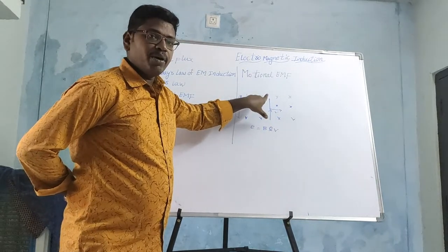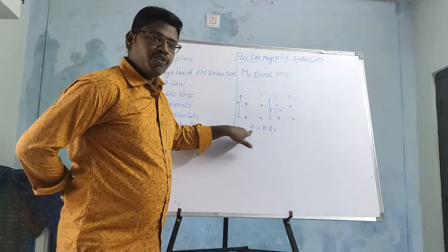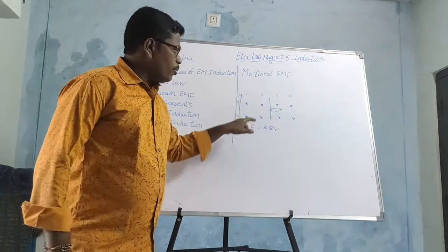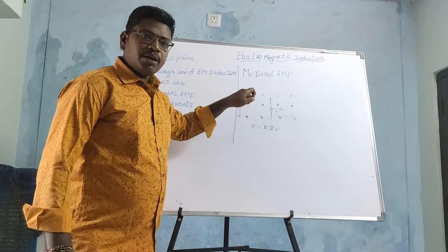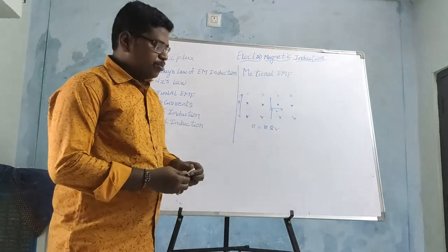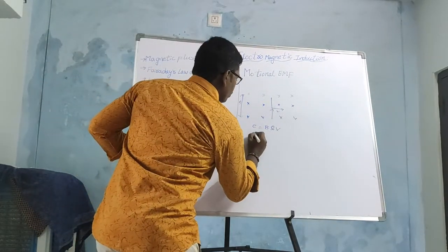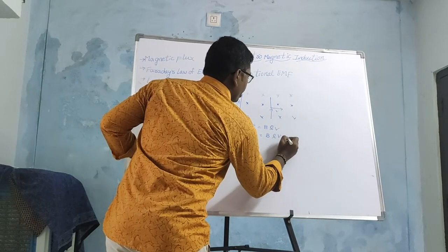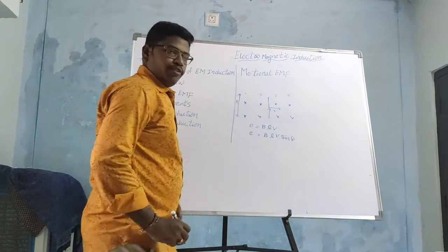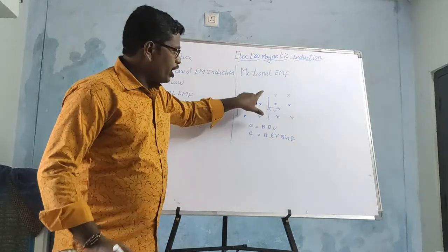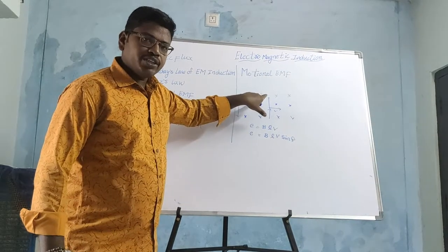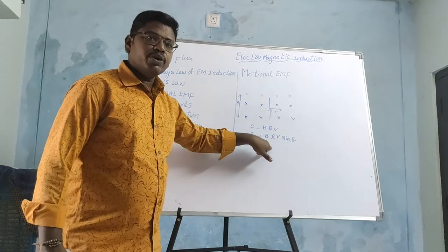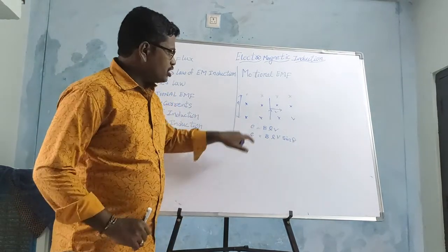If for example this conductor is kept at some angle theta, then the induced EMF is E = BLV sin θ. Whenever a conductor is kept with some angle, the induced EMF is E = BLV sin θ.